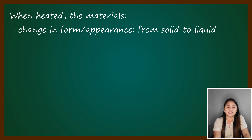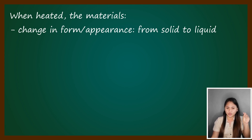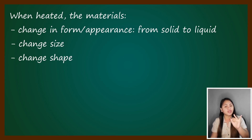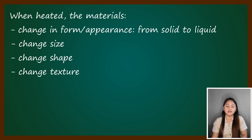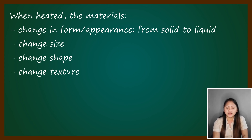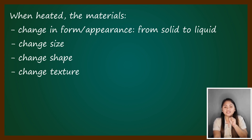So how could we describe the changes that happen to the material when heated? The material has changed its form from solid to liquid when we heat it. It also changed its size, shape, and texture. Tatandaan: when the solid material is underheated, it may change its size, shape, texture, and even its form — from solid to liquid.